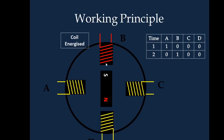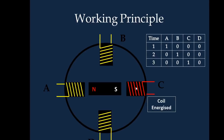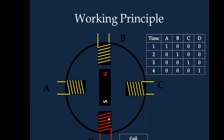When coil B is energized and A is de-energized, the rotor has moved to this direction, so this is denoted as 0 1 0 0 at time instant 2. In the next instant it moves when C is energized. Similarly when D is energized this will happen. So this is how the stepper motor works.